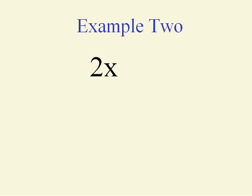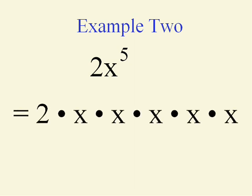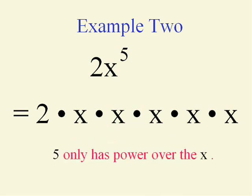Let's throw in a letter: two x to the fifth power. This one's a little bit weird because that five only has power over the x. The reason for that is the order of operations says that exponentiation between the x and the five has to occur before the multiplication between the two and the x.